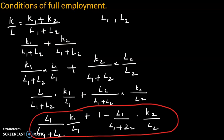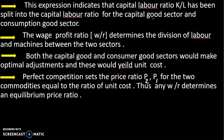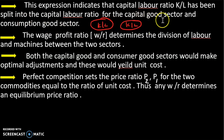In two sectors, we use the capital-labour ratio — that is, we split it between the capital goods sector and the consumption goods sector, using total labor and sector-level labor. The wage-profit ratio determines the division of labour and machines between the two sectors.